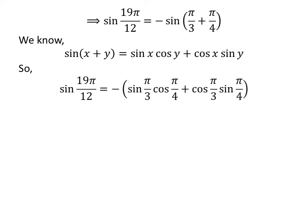The application of the above identity gives us sin of 19 times pi upon 12 is equal to minus of sin of pi upon 3 times cos of pi upon 4 plus cos of pi upon 3 times sin of pi upon 4.